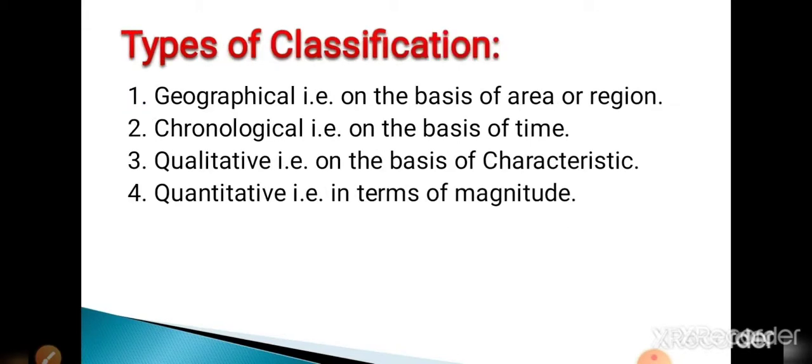Next is types of classification. There are four types of classification: geographical classification, chronological classification, qualitative classification, and quantitative classification. Let's see the types one by one.